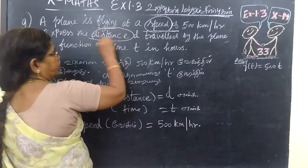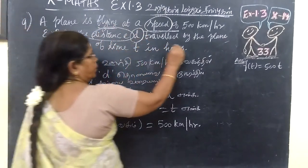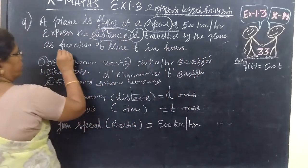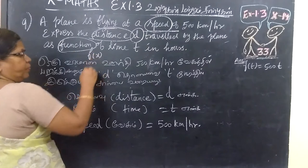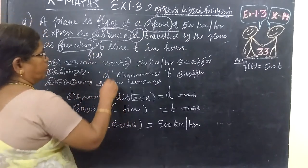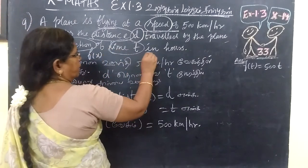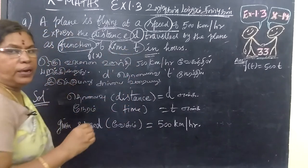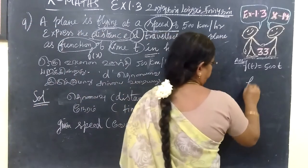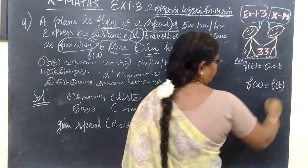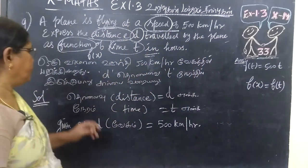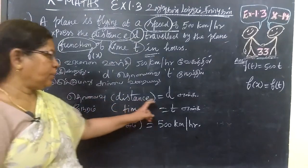Distance is denoted by d. Traveled by plane as a function, function is called f of x. With the time t in hours, that function is in terms of t. f of x is in terms of t, then f of t is what.